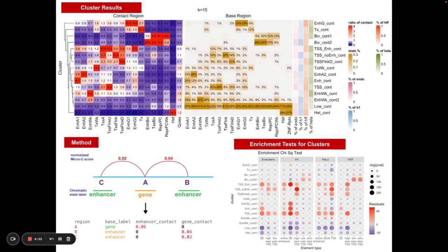Hi everyone, my name is Corinne Sexton and I'm a PhD student in the Department of Biology at the University of Nevada Las Vegas. Today my project is titled the clustering of human microc data and chromatin state data identifies chromosome confirmation signatures and cell types.